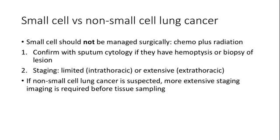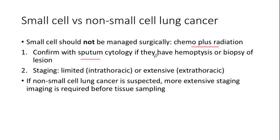If we can confirm right away that it's small cell lung cancer, we don't need a more thorough workup — these people need chemo and radiation. On the exam, sputum cytology showing small round blue cells is enough to diagnose small cell cancer. If a patient presents with headache, order a CT scan to check for brain metastasis from small cell — but don't order a brain CT for someone without symptoms of brain metastasis.